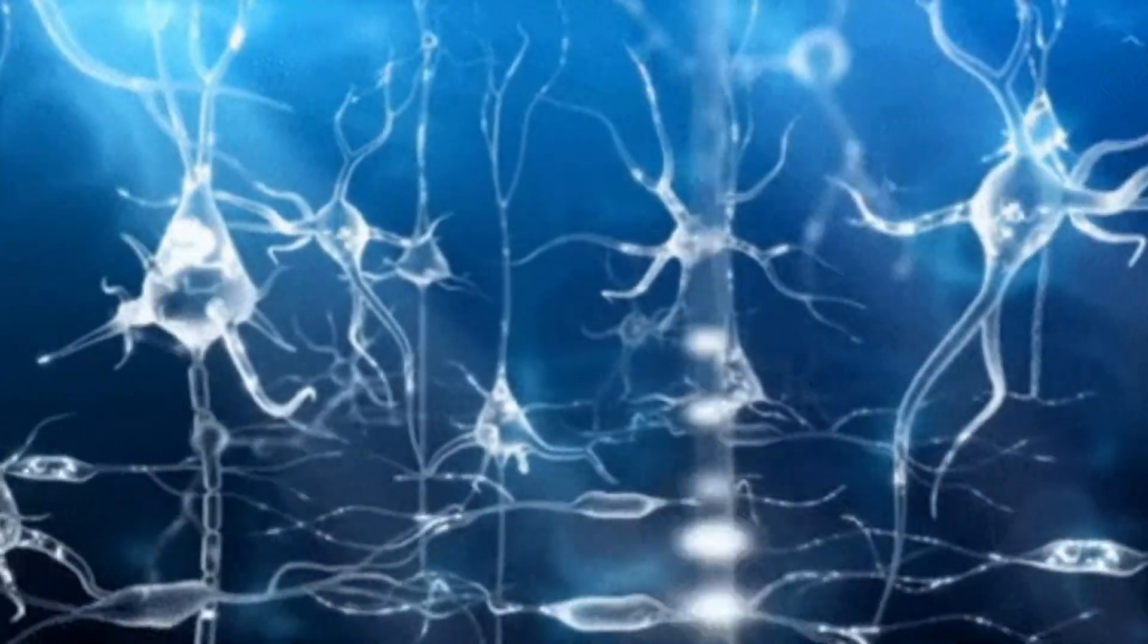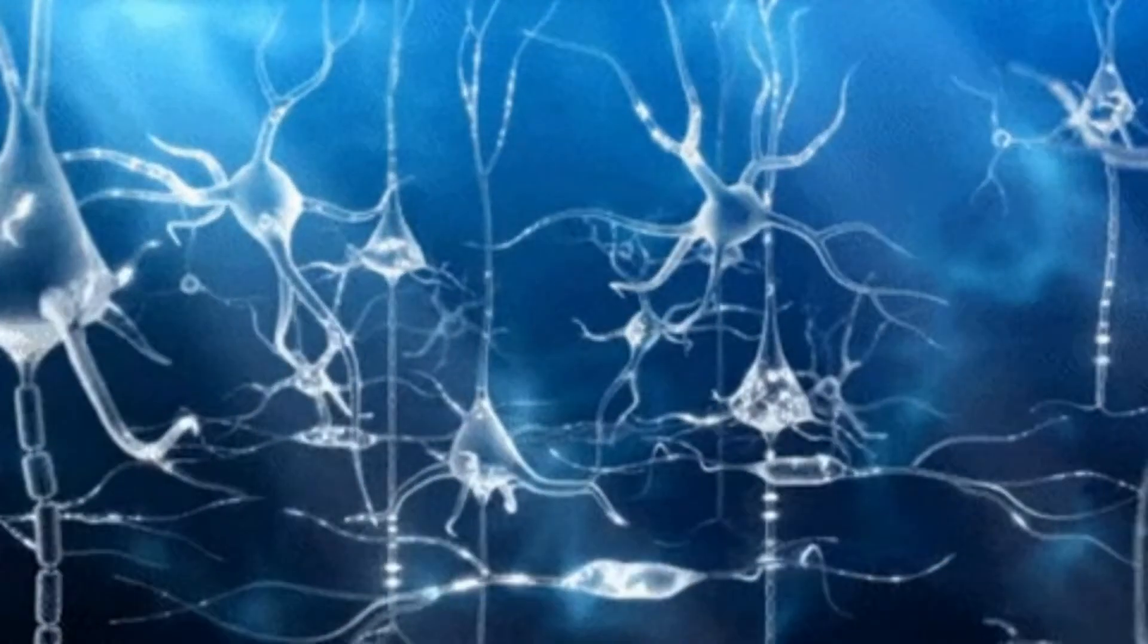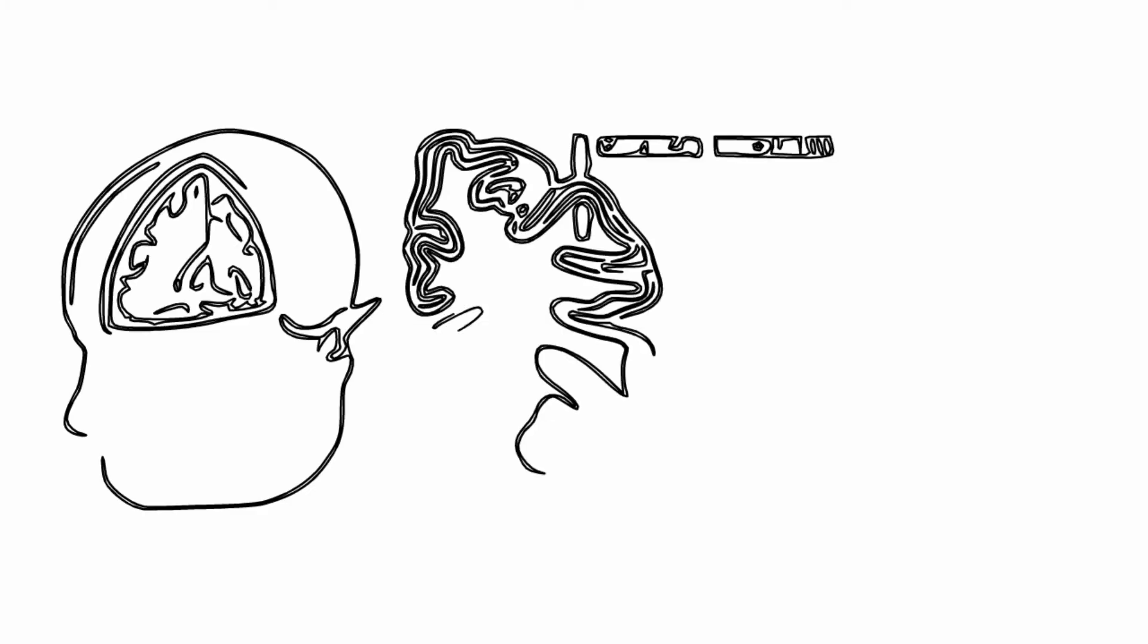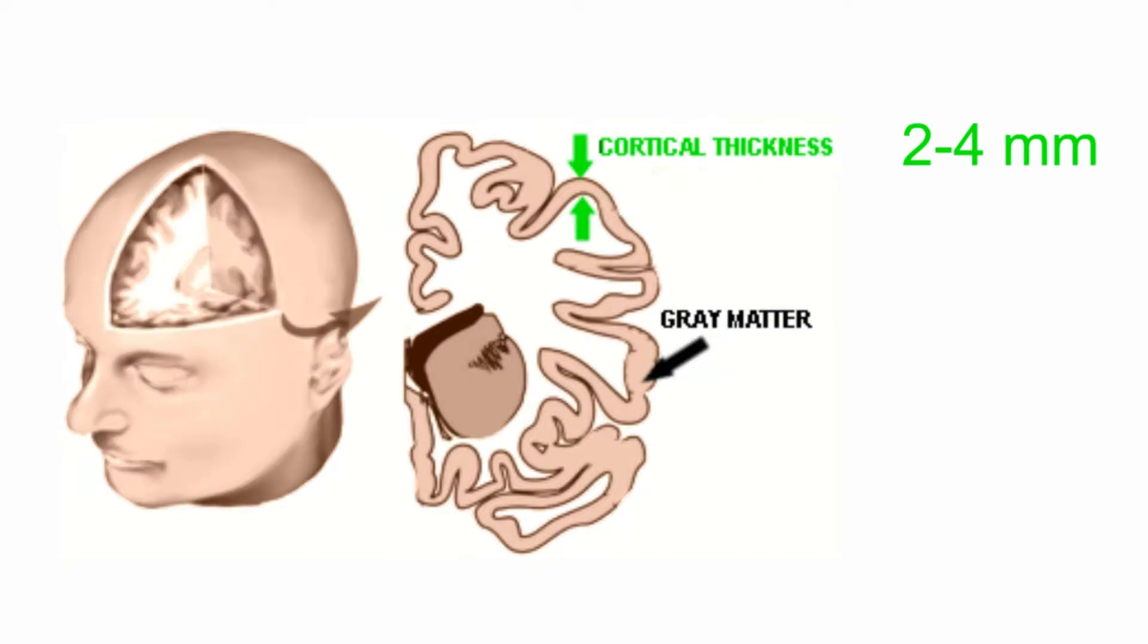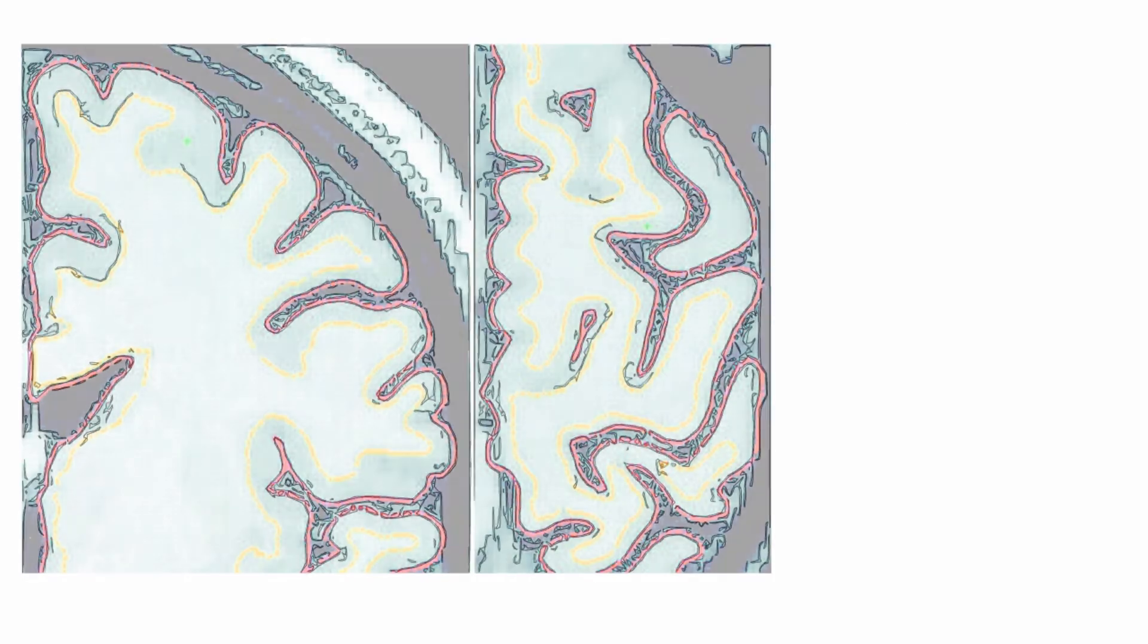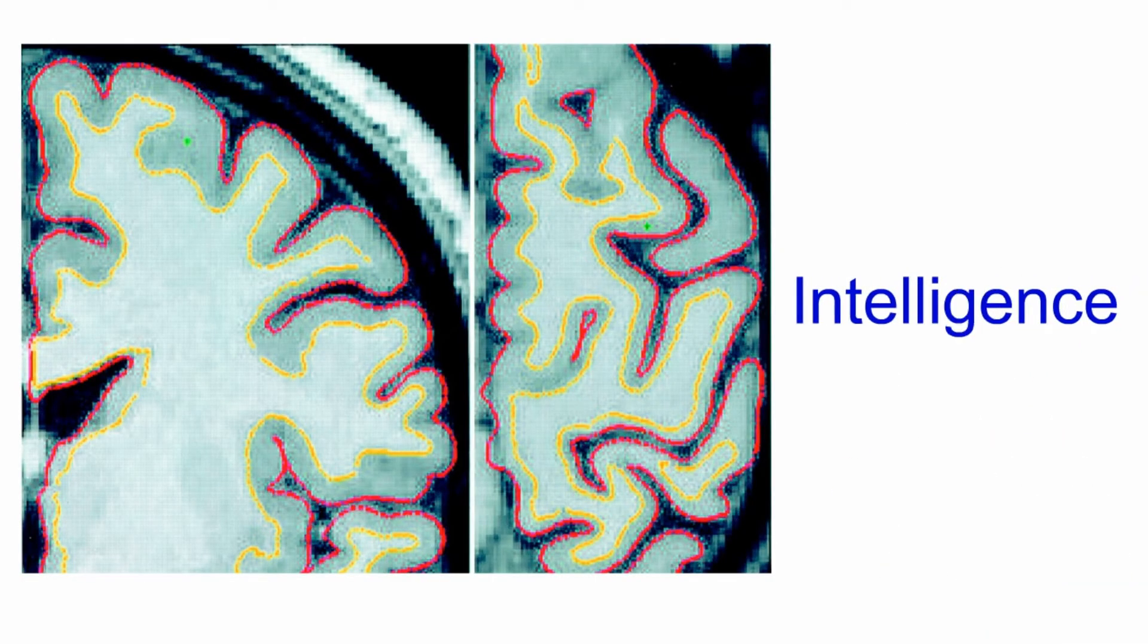In the human brain, the cortex is the outer layer of the brain and is between two to four millimeters thick. It is interesting to know that one study has found some positive association between the cortical thickness and intelligence.